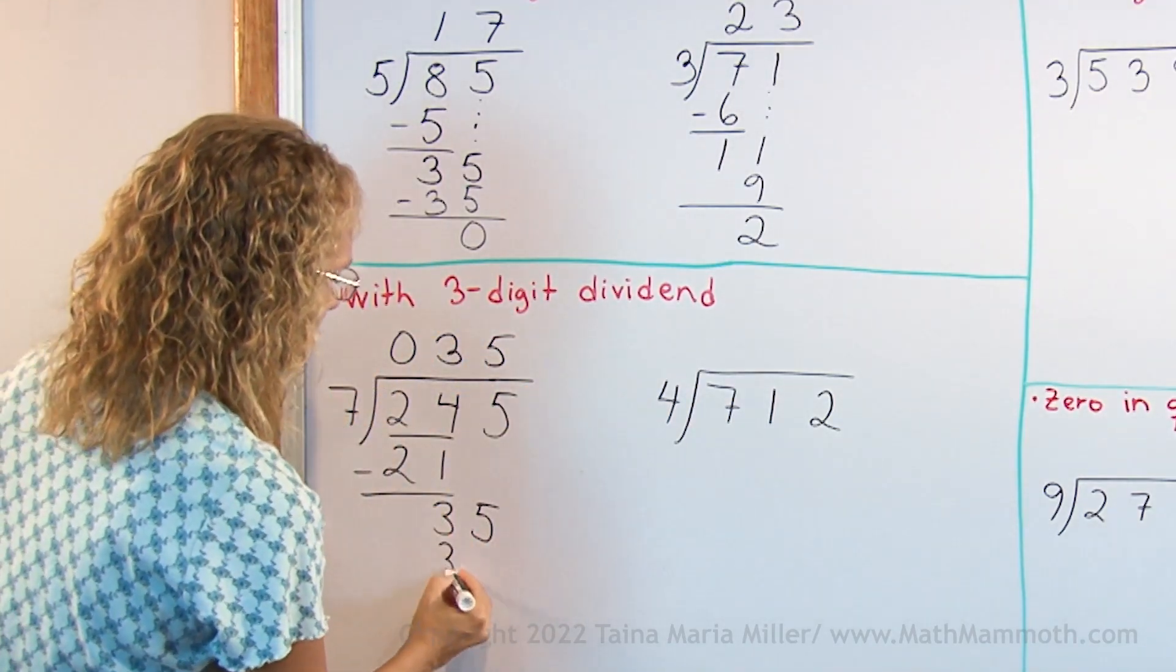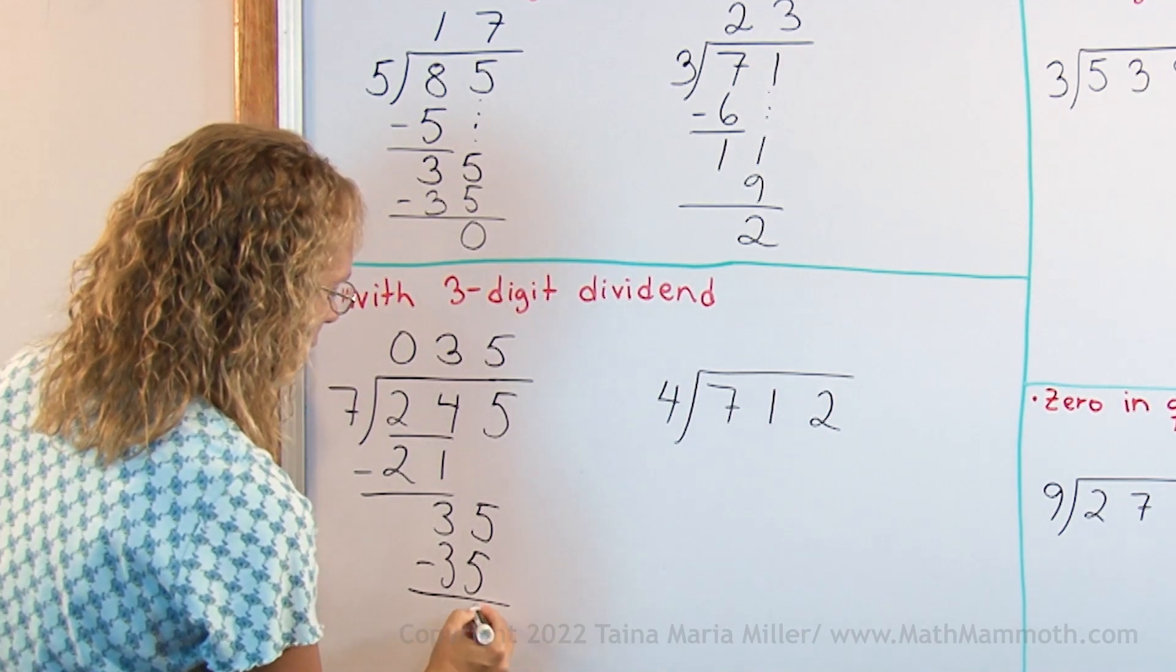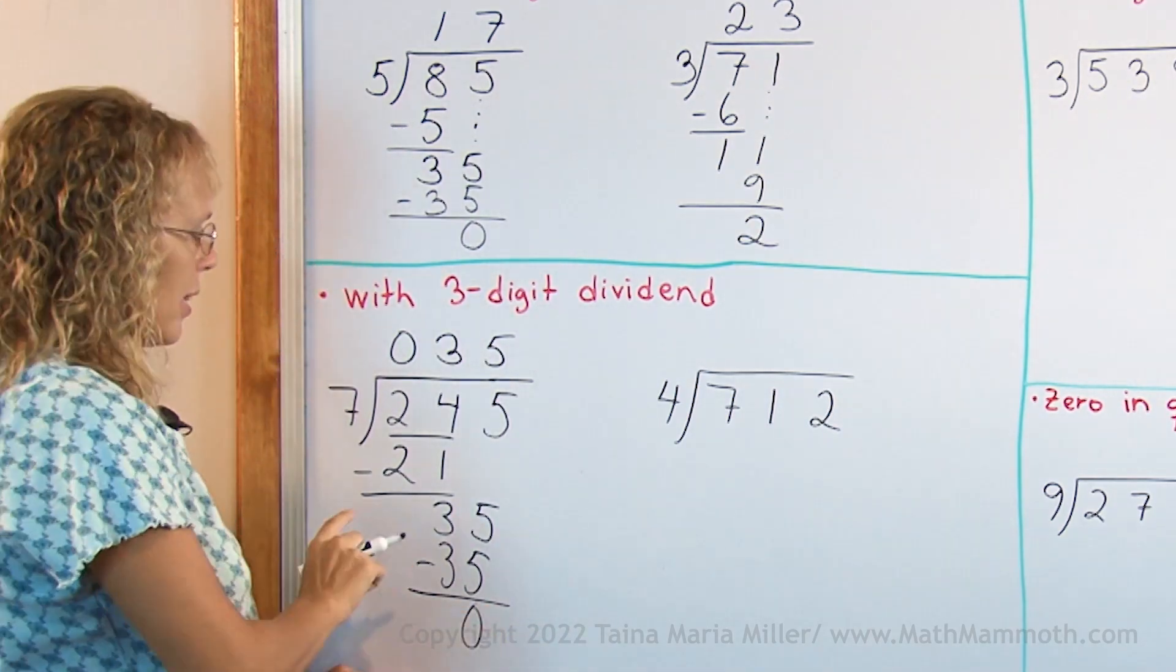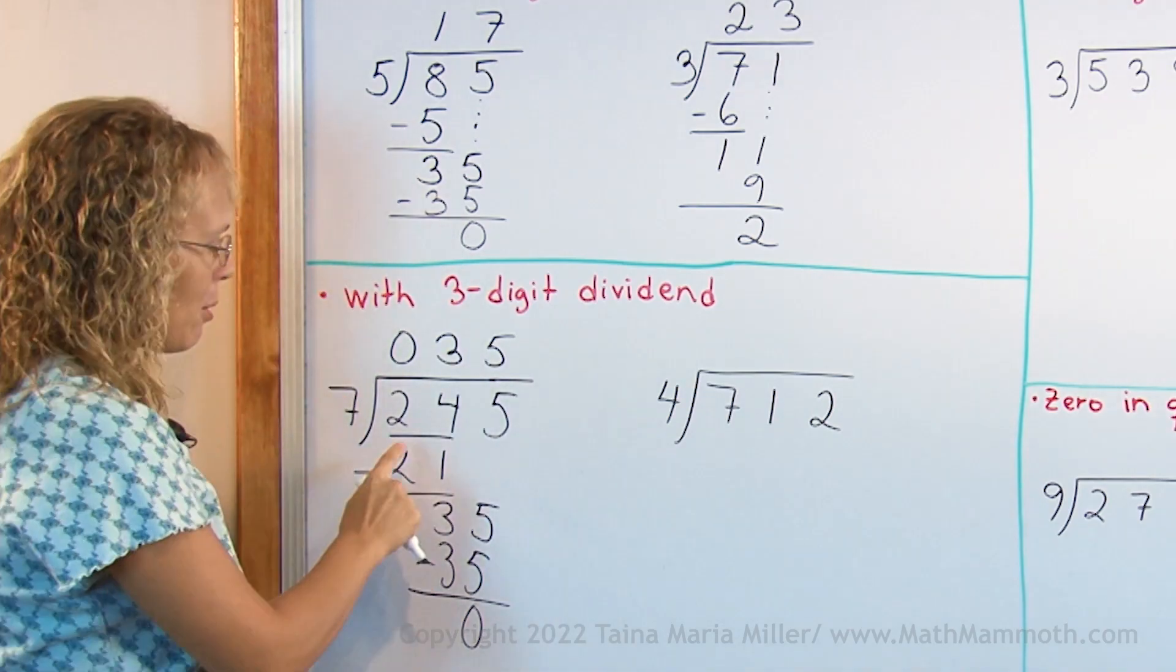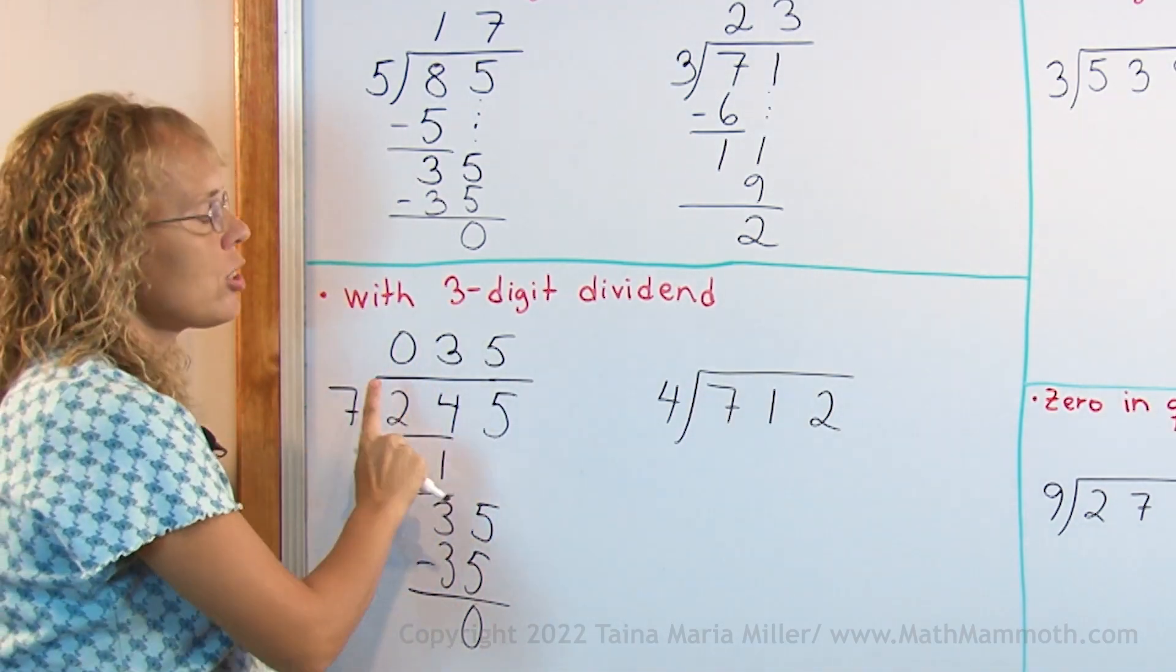5 times 7, 35. Subtract, and the remainder is 0. This division actually didn't have any more steps than this one. And that is because in the beginning we had to look at 2 digits to start the division.